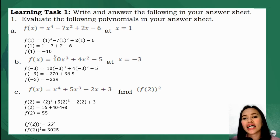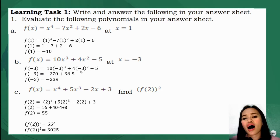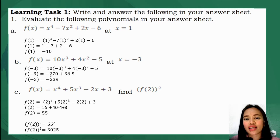Letter b: f(x) equals 10x cubed plus 4x squared minus 5, at x equals negative 3. So f(negative 3) equals 10 times negative 3 cubed plus 4 times negative 3 squared minus 5. Evaluating this gives negative 270 plus 36 minus 5, therefore the value is negative 239.